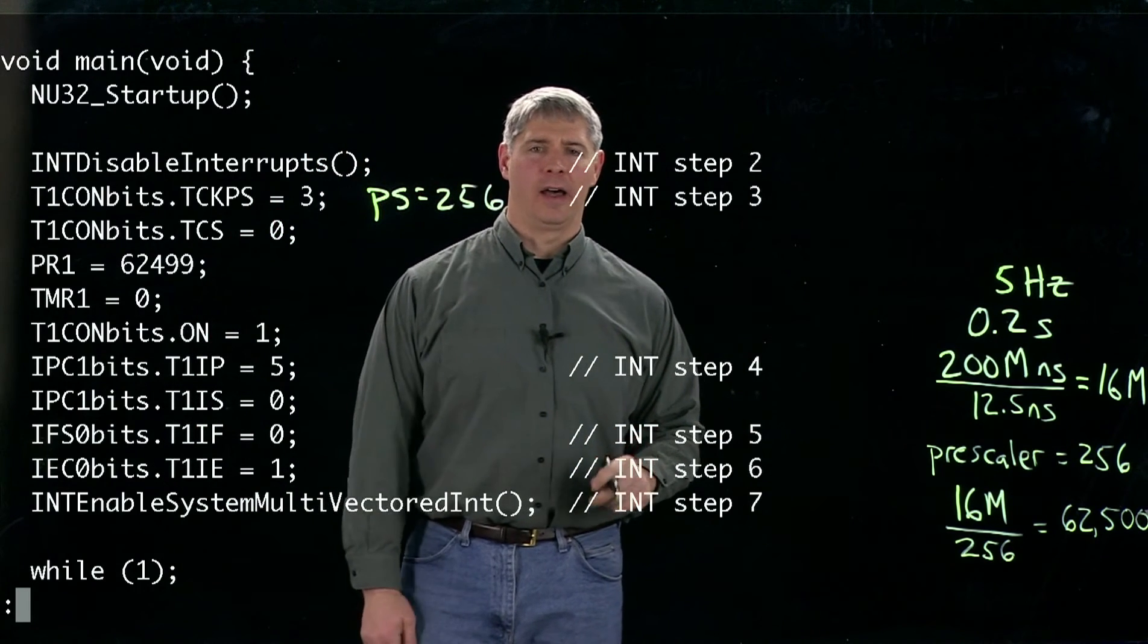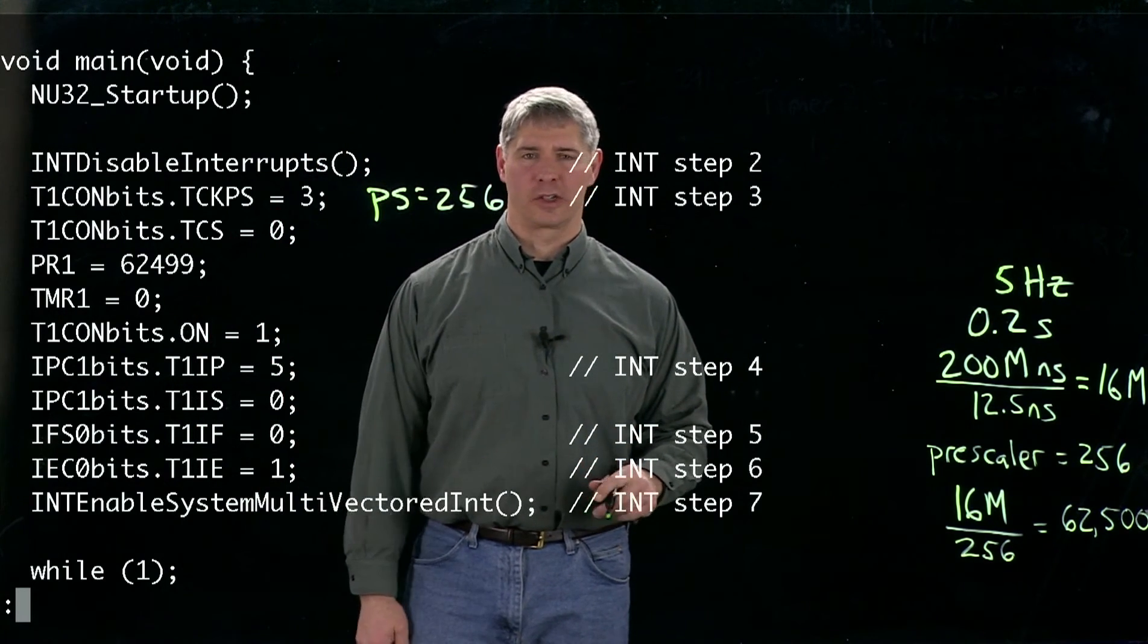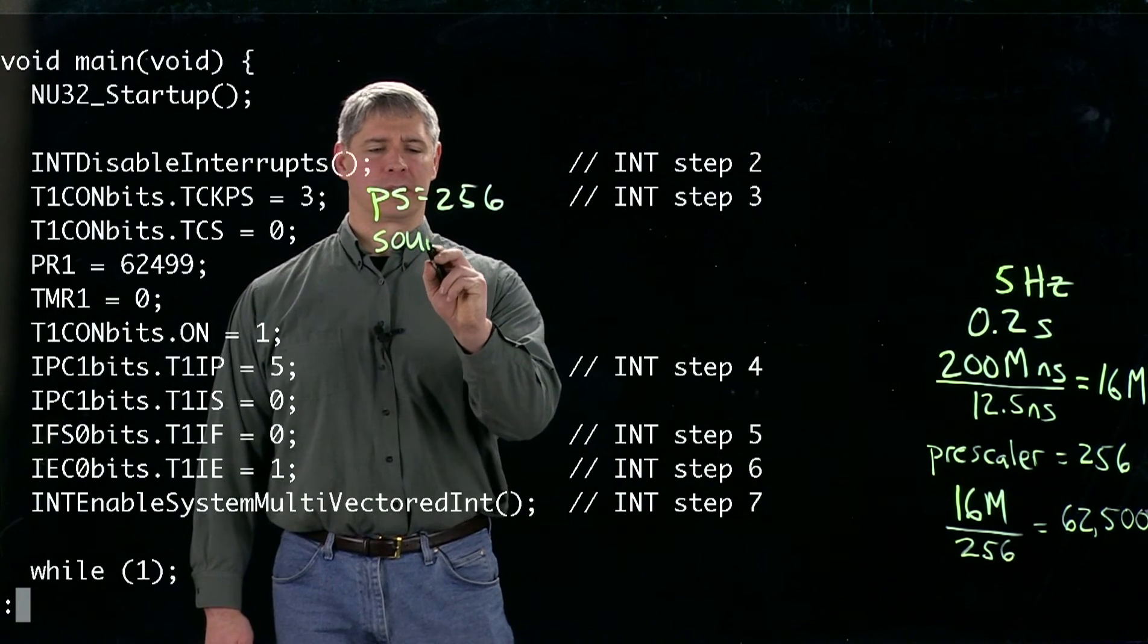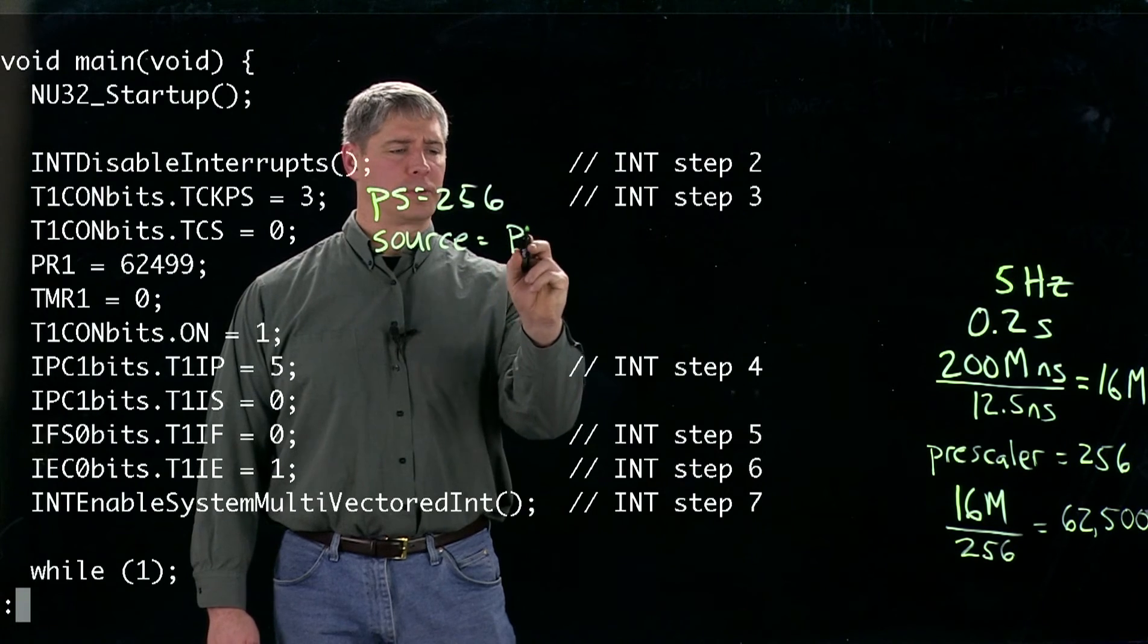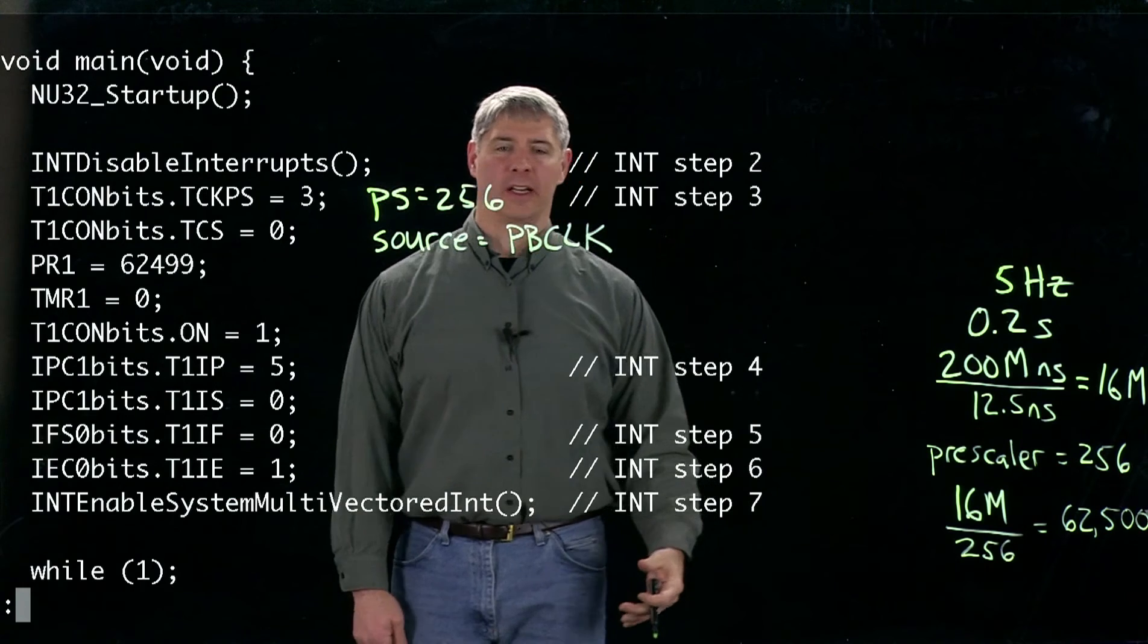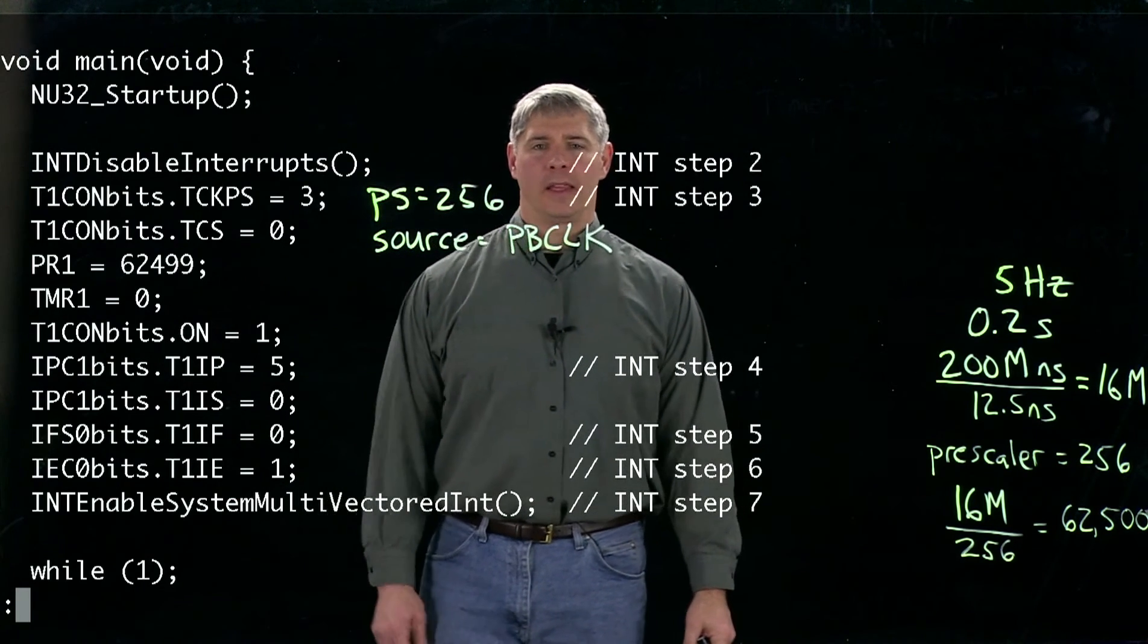The next line is controlling what the source is for the timer. So this is source is equal to the peripheral bus clock. Remember, if this was a one, then the source would be an external input. Now here we